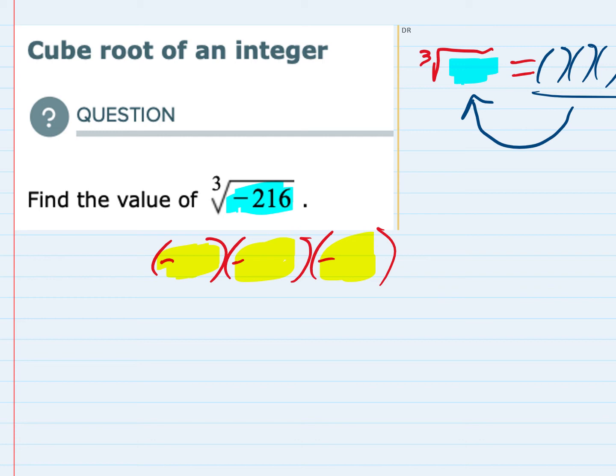So five cubed would give me five times five times five, which is 25 times five, that's 125. So that is not big enough. It's not 216.